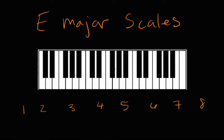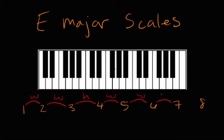So all these major scales are all seven notes and they all have the same distances between them relative to the major scale formula. The major scale formula tells us the distance between these notes. Between the first and second note we have a whole step, between the second and third a whole step, between the third and fourth a half step, between the fourth and fifth a whole step, between the fifth and sixth a whole step, between the sixth and seventh a whole step, and finally between the 7th and 8th notes, which brings us back home, we have a half step.